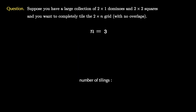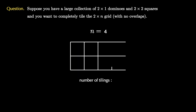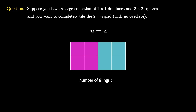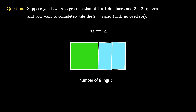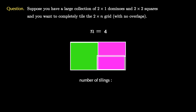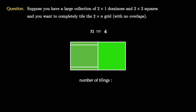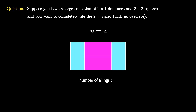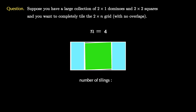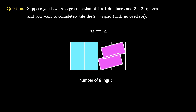We can even go further and try the n equals 4 board. In this case, we list them all out, and if we do our work carefully and are systematic about how we compute the tilings, we'll see that there is a total of 11 such tilings on the 2 by 4 board.